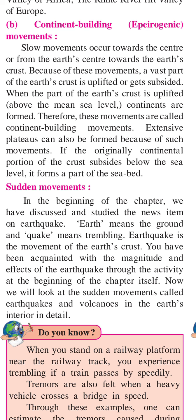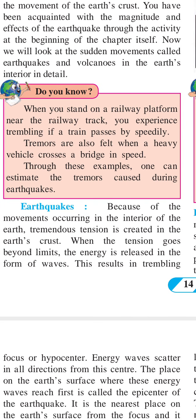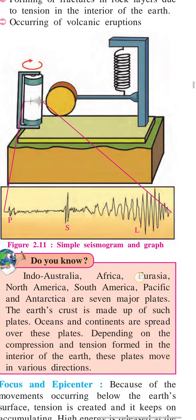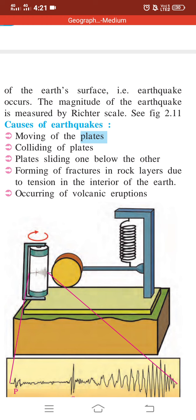We will look into the sudden movements called earthquakes and volcanoes in detail. Earthquakes occur because of movements in the earth's interior, which create tremendous tension in the earth's crust. When the tension goes beyond its limits, the stored energy is released in the form of waves, resulting in the trembling of the earth's surface — that is an earthquake. The magnitude of an earthquake is measured by the Richter scale.